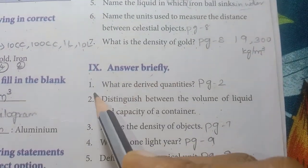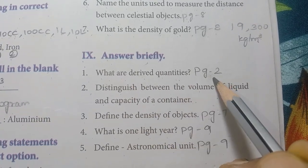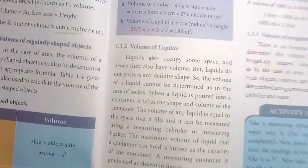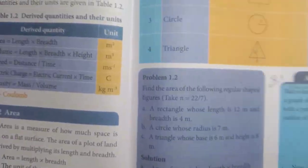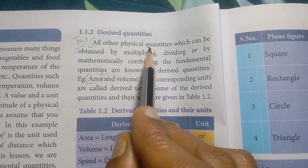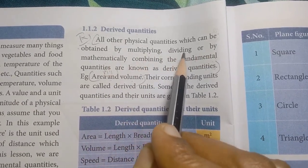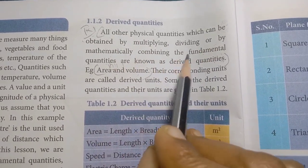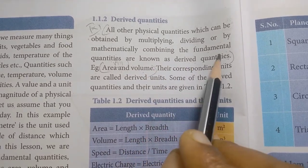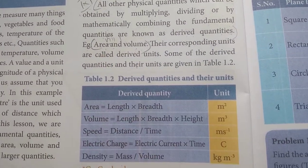Roman numeral 9, answer briefly. First one: what are derived quantities? Page number 2. All other physical quantities which can be obtained by multiplying, dividing, or by mathematically combining the fundamental quantities are known as derived quantities. Examples: area and volume.